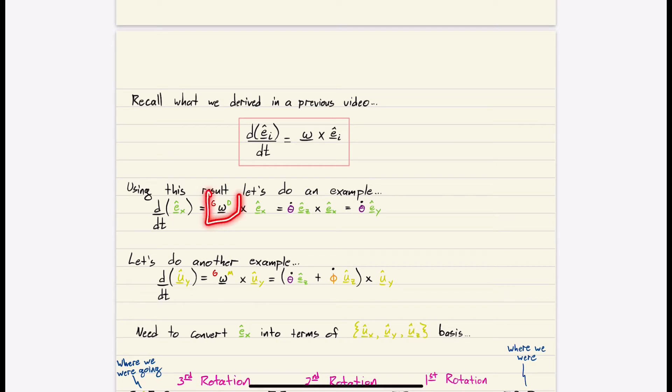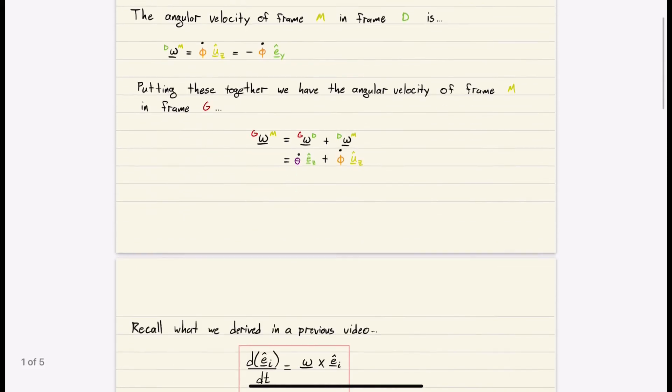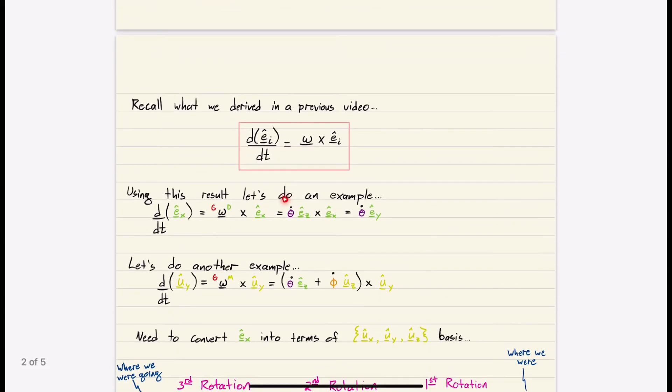Well, the absolute angular velocity is D in G, which we said was right here, theta dot EZ. And then we cross it with itself. We cross it with EX. So we end up with this expression. EZ crossed with EX is EY. So we just end up with theta dot EY. So the rate of change of our unit basis vector EX is theta dot EY.